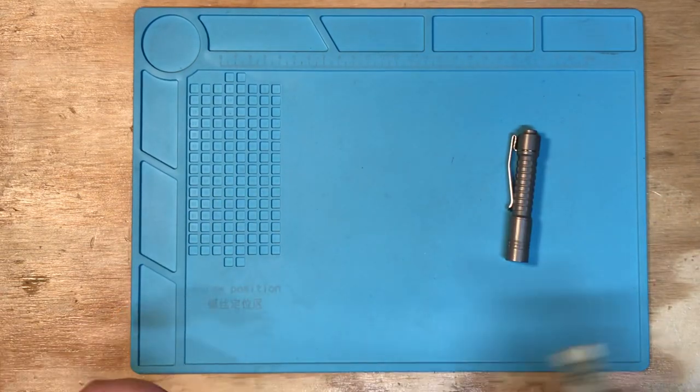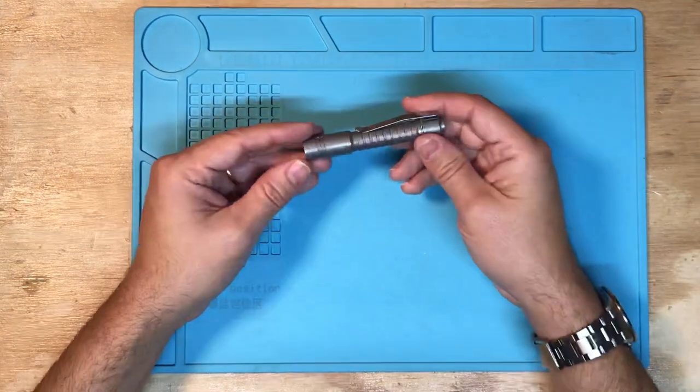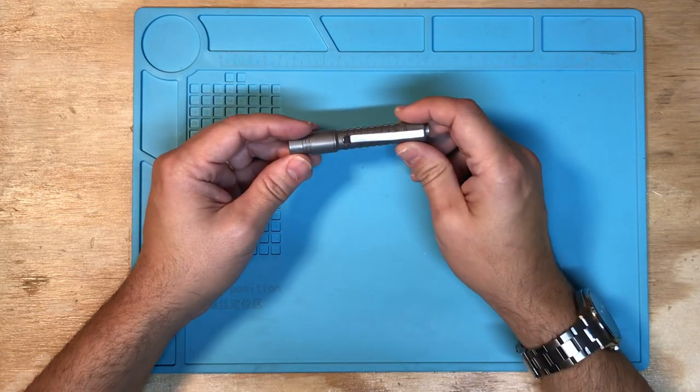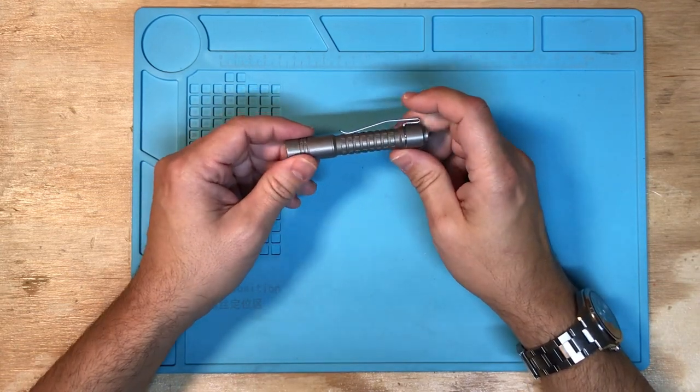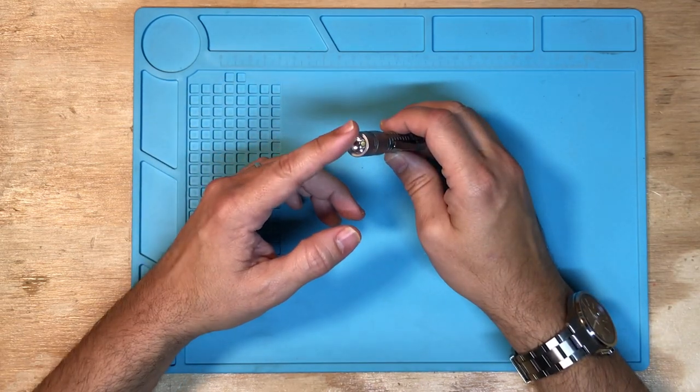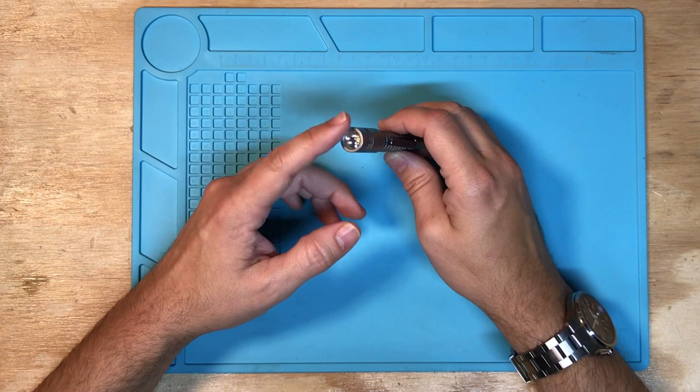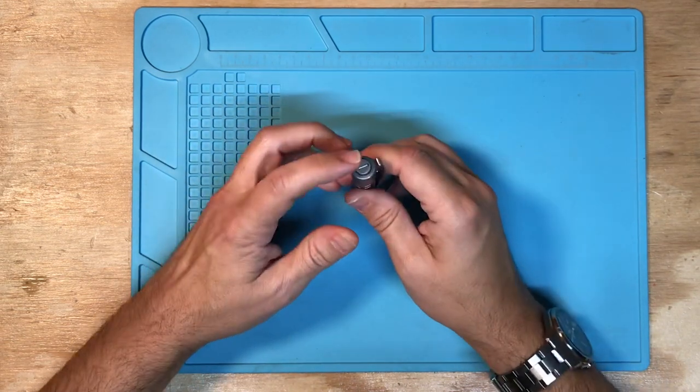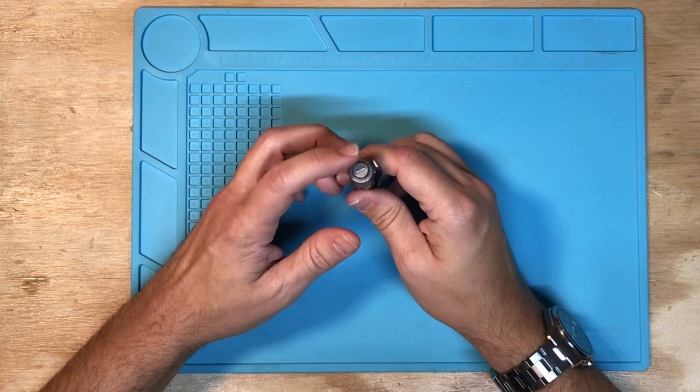So this light is an unusual light in that it's a relatively small run. It's all titanium. I think there's another version that might be copper but this is a titanium version. I think this one runs an Achia 219B emitter and it has a built-in tritium insert.